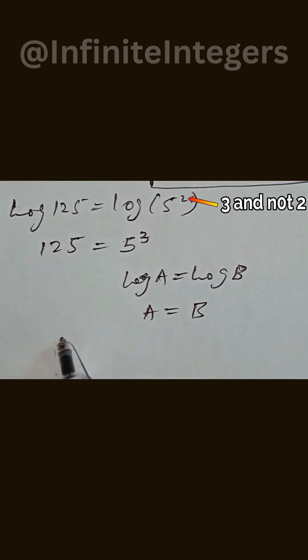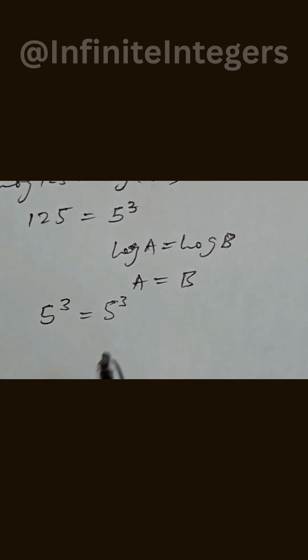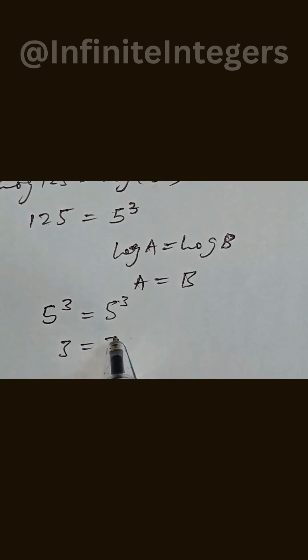This can be simplified as 5 to the power of 3 which equals 5 to the power of 3. So if we equate the exponents, we have 3 equal to 3, and that's it.